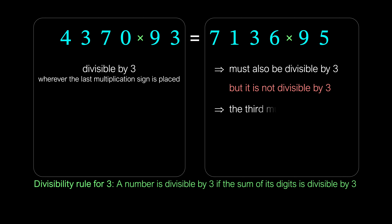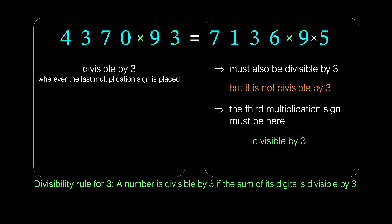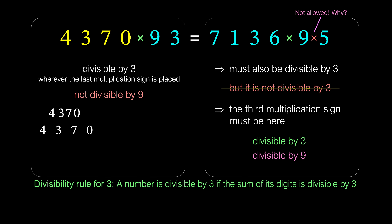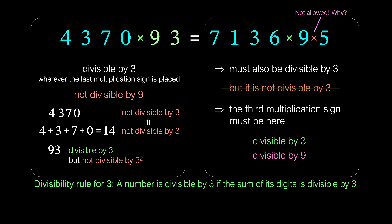So, we must place the third multiplication sign to the right of the equality sign. We could place it between 9 and 5, but we cannot — in this case the number on the right would be divisible not only by 3, but also by 9. The sum of the digits of 4370 equals 14, which is not divisible by 3, so 4370 is not divisible by 3. Meanwhile, 93 is divisible by 3 but not by 9, which means the number on the left is divisible by 3 but not by 9.